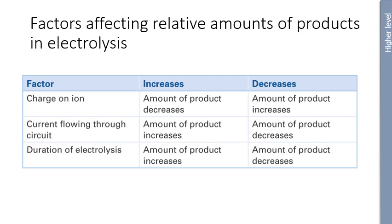Factors affecting the relative amounts of products in electrolysis include: the charge on an ion — as charge increases, the amount of product decreases, and vice versa; the current — increasing current increases the amount of product because more electrical energy is provided; and the duration — the longer electrolysis runs, the more product is formed.